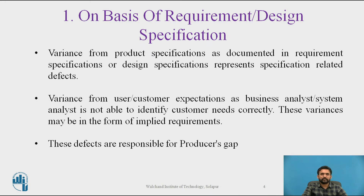None of the requirements should be based on assumption. Requirements should be complete, covering each and every aspect of the system under development. Variance from user or customer expectations occurs when a business analyst or system analyst is not able to identify customer needs correctly. These variances may be in the form of implied requirements.